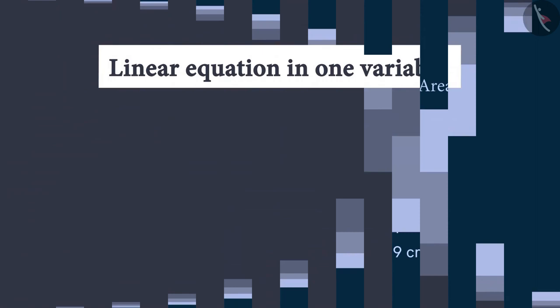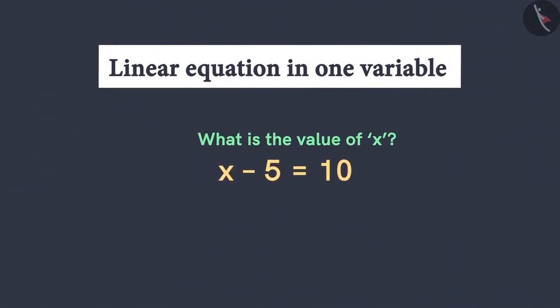Now let's solve one more simple problem. Can you tell me what will our first step be? Yes, we will transpose the number minus 5 to the right hand side. But be careful: when we transpose minus 5 to the other side, it will become plus 5. After this step we will get the value of x as 15. As you can see, we got our solution in just one step by transposing minus 5 to the other side.